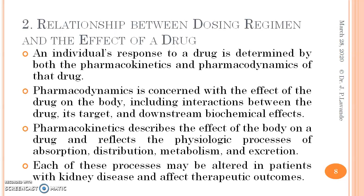Let us understand the relationship between dosing regimen and the effect of a drug. An individual's response to a drug is determined by both pharmacokinetics and pharmacodynamics of that drug. Pharmacodynamics is concerned with the effect of the drug on the body, including interactions between the drug, its target, and downstream biochemical effects. Pharmacokinetics describes the effect of the body on a drug and reflects the physiologic processes of absorption, distribution, metabolism, and excretion.